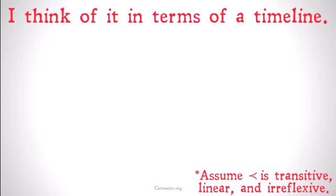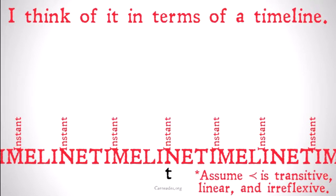Think of it in terms of a timeline. Note the caveat: assume that precedence is transitive, linear, and irreflexive. We're going to take a look at what exactly all of those things mean. We've talked about transitive and irreflexive before; we haven't talked as much about linear. For now, don't worry about that and just think about a timeline, and take instant t to be now.